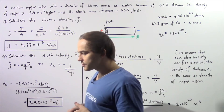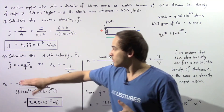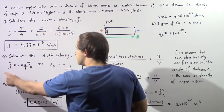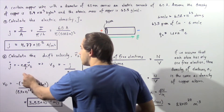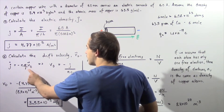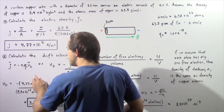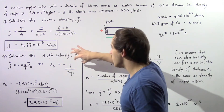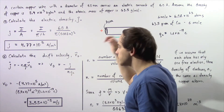In the previous lecture, we derived a relationship between electric current density and drift velocity. We showed that the electric current density J is equal to negative of the product of the electron density n, multiplied by the charge on one electron q_e, multiplied by the drift velocity v subscript d. Rearranging for drift velocity: v_d equals negative J divided by n times q_e.